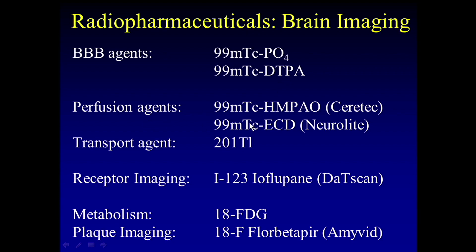Now we have agents that will actually stick to brain tissue — HMPAO and ECD — which are very lipophilic agents, so you can get an image of the perfusion pattern. Thallium is a tumor imaging agent that goes through the sodium-potassium transporter, so tumors that have high sodium-potassium transport will have high thallium uptake. There's also a receptor imaging tracer, I-123 Ioflupane, which goes to the presynaptic dopamine reuptake receptor. FDG is used for metabolism, and then there's amyloid plaque imaging with florbetapir.